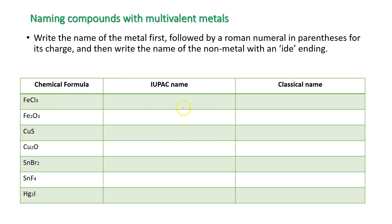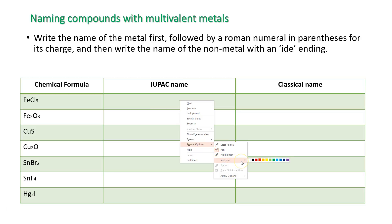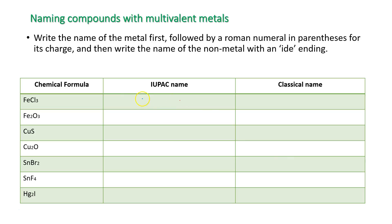Starting with FeCl₃, I would write iron, and then in parentheses, 3. The reason I know it's 3 is because chlorine can only have a charge of negative 1. Since there are 3 chlorines, the total charge from chlorine is negative 3, so the iron needs a charge of positive 3 to balance it. So it's going to be iron(III) chloride.